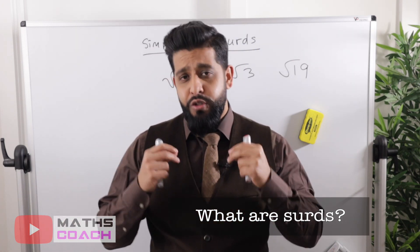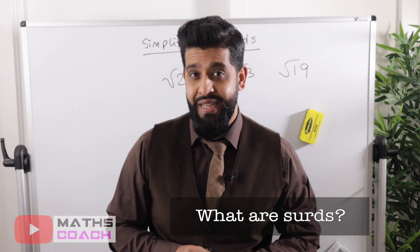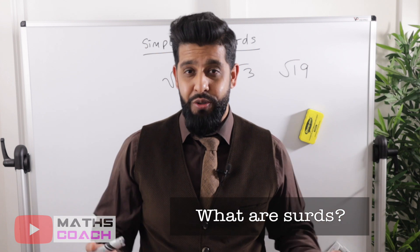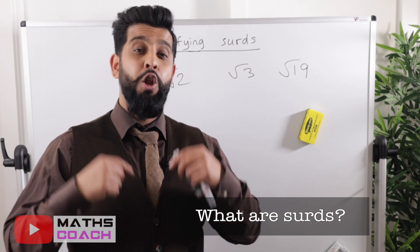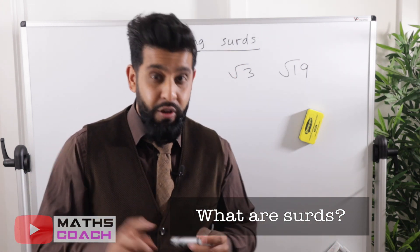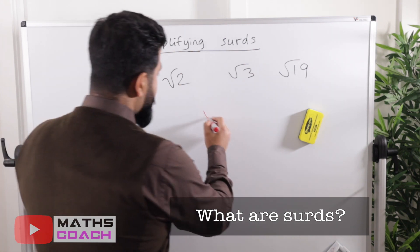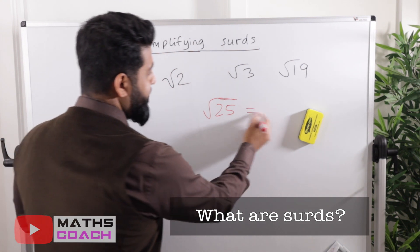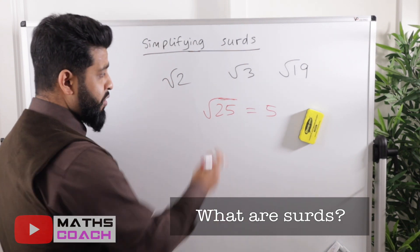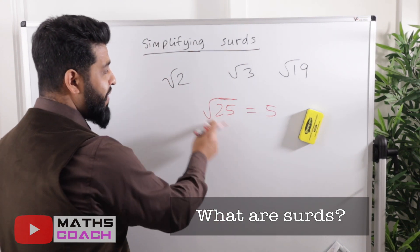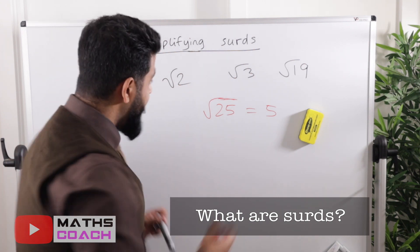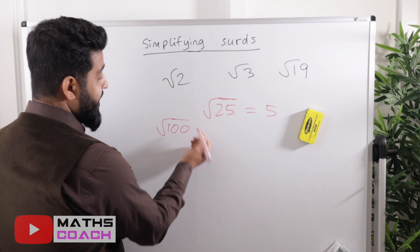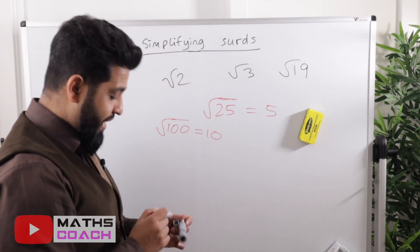So what is a surd exactly? A surd is simply a number inside a square root where, if you were to type it into the calculator, it has a never-ending answer — it is irrational. Other numbers may look similar to a surd but are not. For example, the square root of 25 is actually 5, so √25 is not a surd. Similarly, √100 is 10, so it is also not a surd.